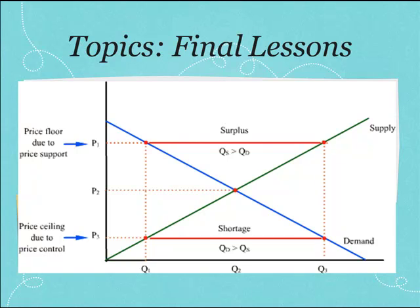Lesson 2.11 is about taxes. Know the difference between excise taxes like a sales tax and a Pigovian tax that are designed to restrict output. You will see these again, as they have shown up in the free response section of the AP exam.